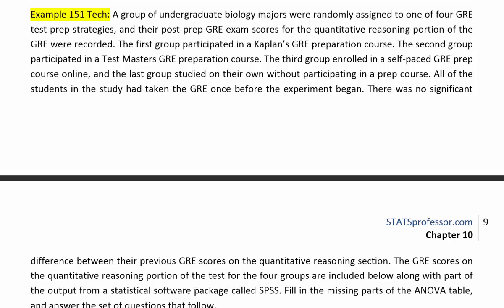All the students in the study had taken the GRE once before the experiment began. There was no significant difference between the previous GRE scores on the quantitative reasoning section. The GRE scores for the four groups are included below, along with part of the output from SPSS. Fill in the missing parts of the ANOVA table and answer the questions that follow.